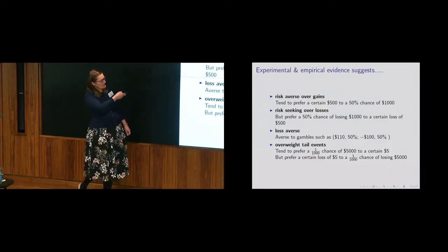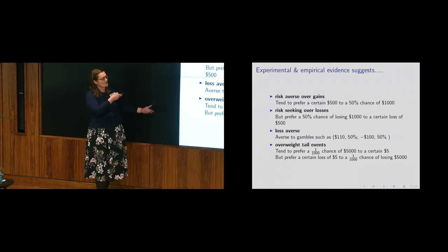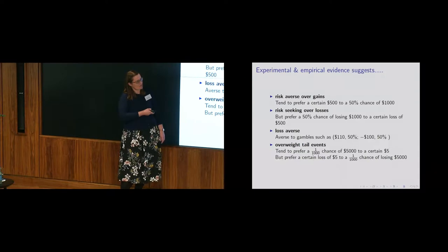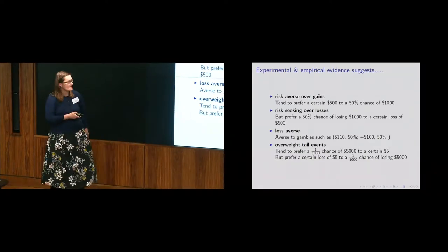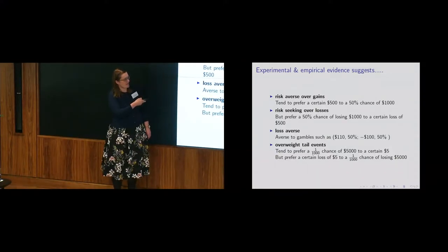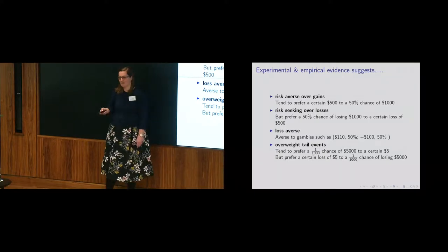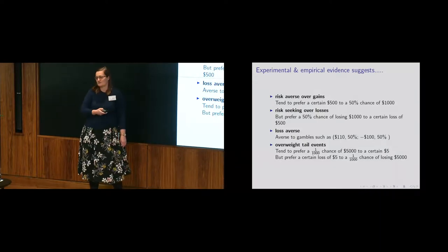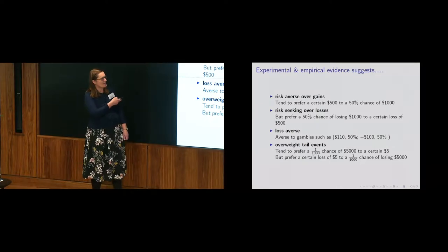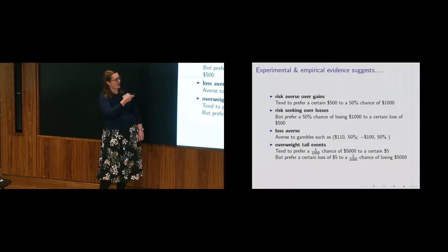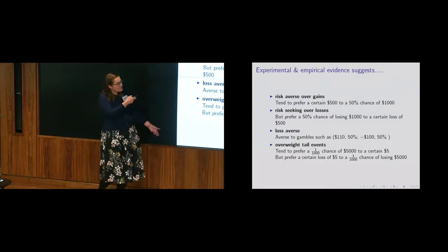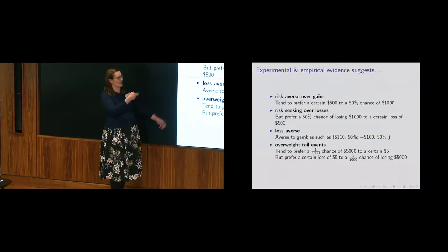Thinking about some lotteries and what people found way back in the 70s: we tend to be risk-averse over gains — we tend to prefer a certain £500 to a 50-50 lottery between winning £1,000 and nothing. If it comes to losses, if you're going to pay £1,000 or zero, or pay for sure £500, you'll tend to prefer to gamble rather than commit to paying a certain amount. So we tend to be risk-seeking where losses are concerned, but risk-averse over gains. Standard expected utility theory tends to assume you're risk-averse everywhere, so this is a big difference.